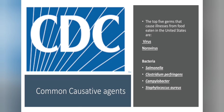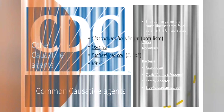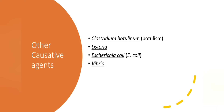We need to know what the common causative agents of food-borne illnesses are. The CDC states that the top five causative agents are: Norovirus, Salmonella, Clostridium perfringens, Campylobacter, and Staphylococcus aureus. They also include other bacteria capable of causing diseases: Clostridium botulinum, Listeria, E. coli, and Vibrio.